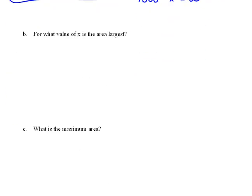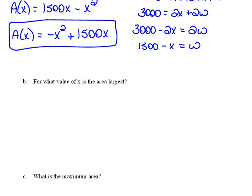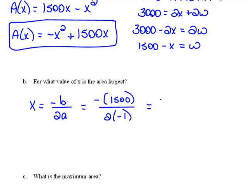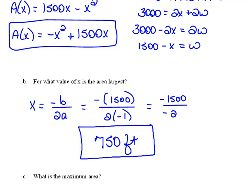Now, for the next part, it says, for what value of X is the area the largest? Well, now that we have our area function, we can go ahead and maximize it or find the vertex, another way of saying that. So we know that X equals negative B over 2A, which would be negative 1,500 divided by 2 times A is negative 1, which would be negative 1,500 divided by negative 2. So that would be 750 feet. If our length is 750 feet, we're going to create the largest area.